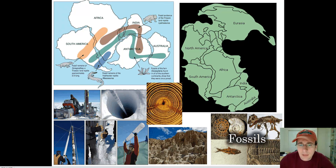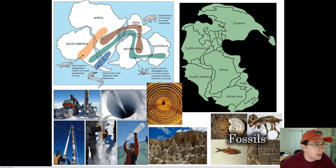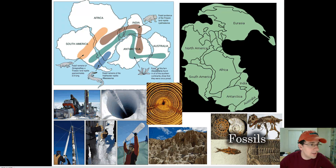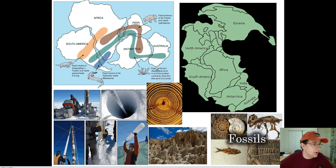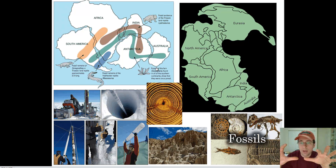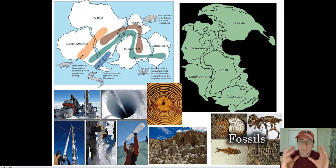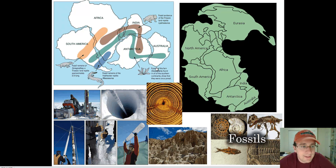He also looked at fossils and found that the same fossils appeared across many continents. For example, a Triassic reptile called Lystrosaurus was found in India, Africa, and Antarctica. And a plant fossil was found on every single continent in the southern part of the world. This is true of other fossils as well — you can find the same species in one continent and another. This suggests these animals were once on the same land mass, and that the land mass later broke apart, separating them.